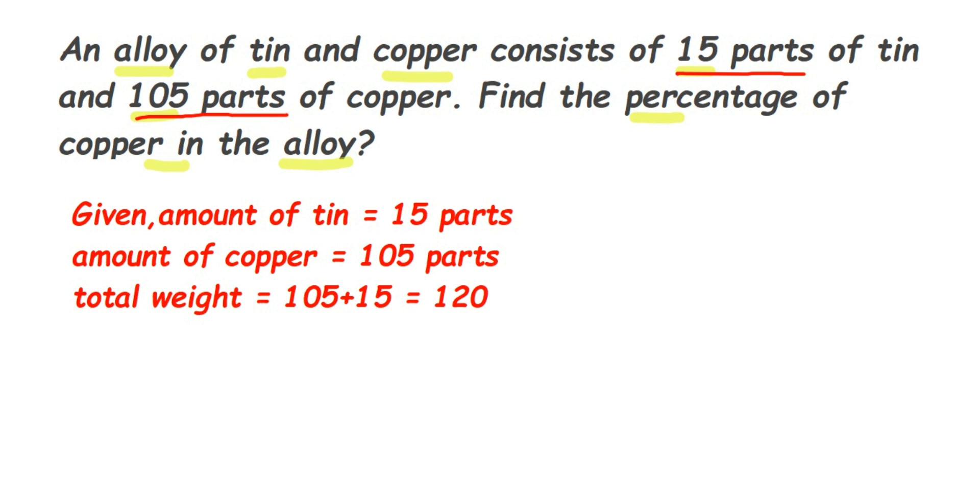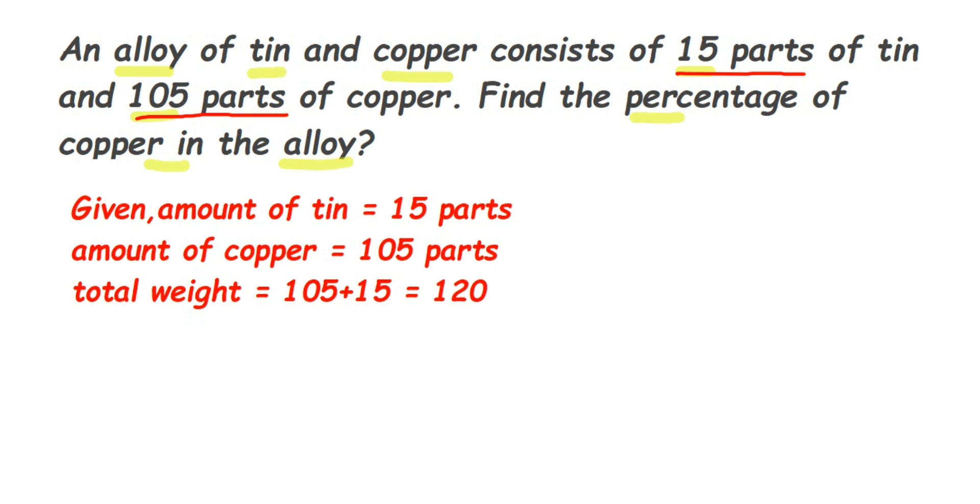Out of this 120, 15 part is tin and 105 part is copper. So we have to find out the percentage of the copper here. So we know that out of this 120, 105 is the part of the copper. So what we are going to do here is, so like I said before.